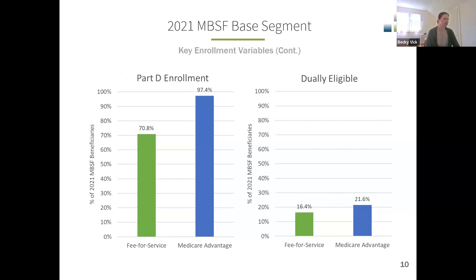These charts show that there is a pretty significant difference between the fee-for-service and Medicare Advantage populations when it comes to Part D enrollment, with MA having a very high rate of Part D enrollment. The MBSF also contains an array of variables that indicate whether a member was dually eligible for Medicare and Medicaid. The Medicare Advantage population has a slightly higher percentage of dual eligibles in their population compared to fee-for-service.